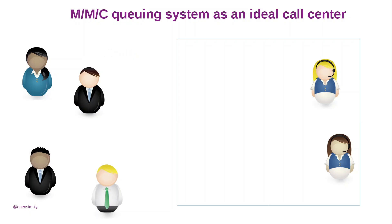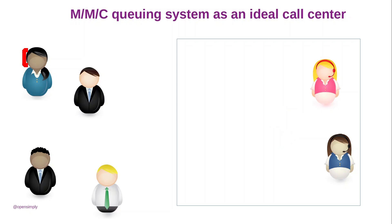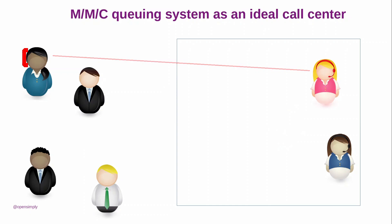Some client is calling. The call center selector looks for an idle agent. A free agent has been found, and the connection between the client and agent is established. The agent becomes busy.